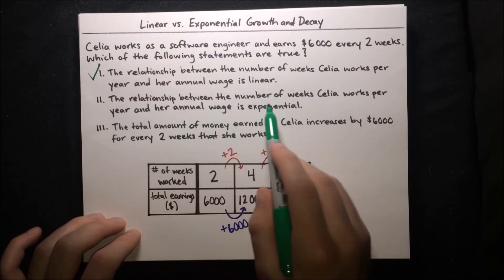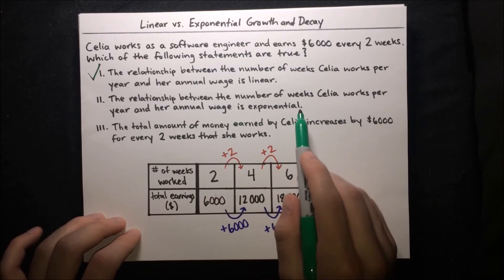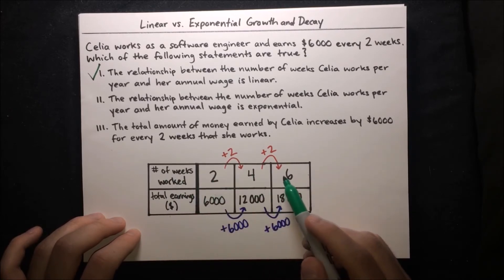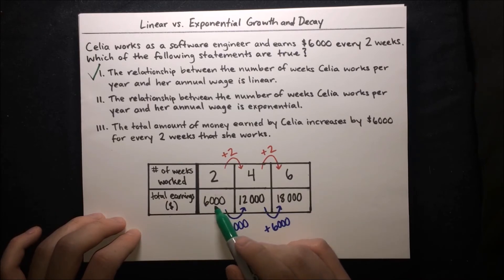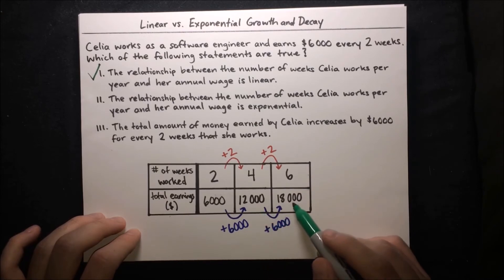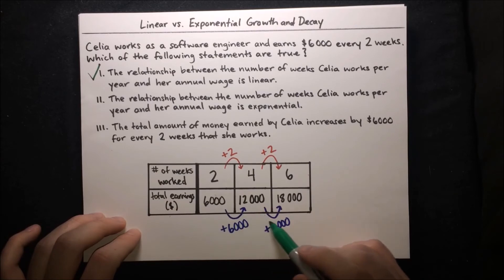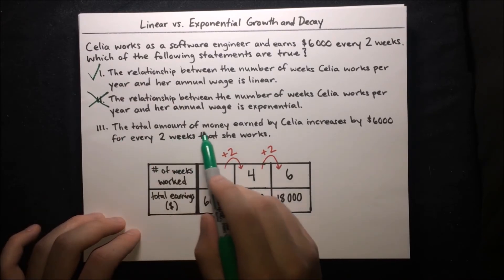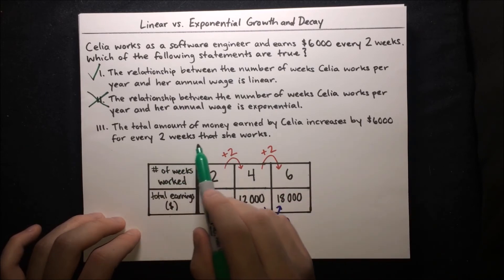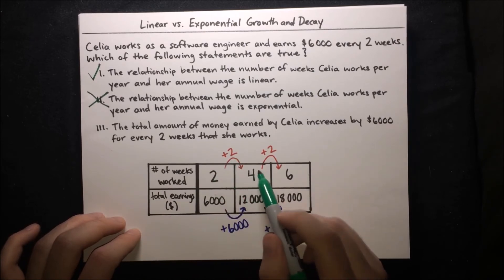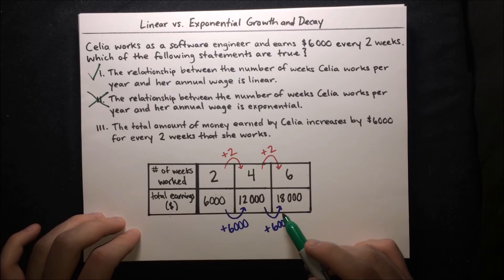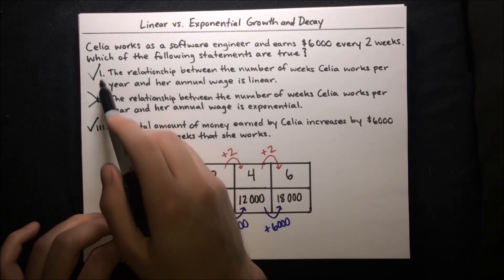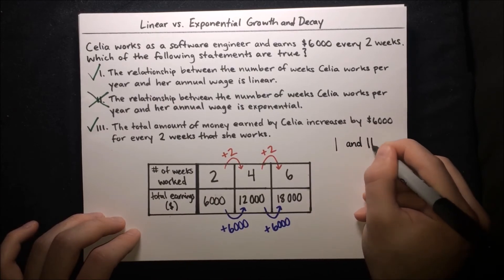Statement 2: the relationship is exponential? For exponential, we'd need to multiply by the same amount each time. Starting with $6,000, multiplying by 2 gives $12,000, but multiplying by 2 again gives $24,000 — not $18,000. So it's not exponential. Statement 3: total earnings increase by $6,000 for every two weeks worked. That's exactly what our table shows, so statement 3 is true. Statements 1 and 3 are correct.